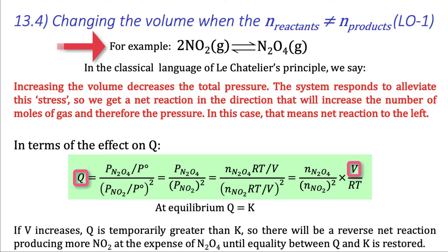Therefore, after an increase in volume, Q is greater than K, and so we once again conclude that there will be a net reaction to the left.